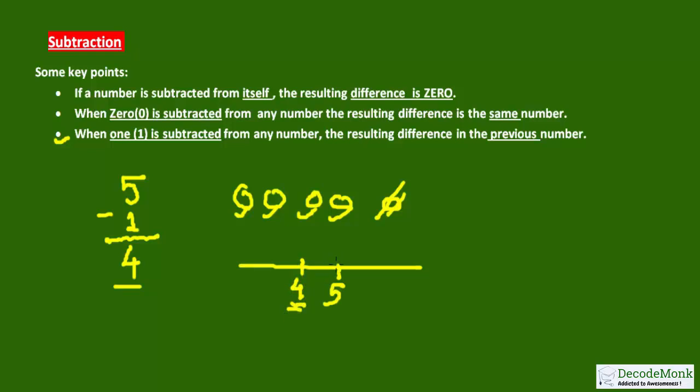On the number line, if you see, 4 comes just before 5, so this is 4 and then it is 5. So 4 comes just before 5. This is what is meant by this statement: when 1 is subtracted from any number, the resulting difference is the previous number. 99 minus 1 would be 98. 98 comes before 99.